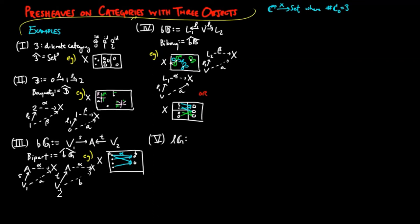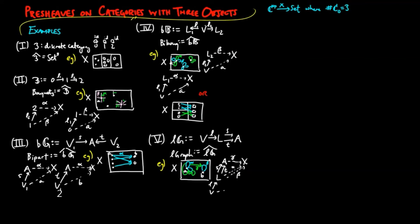The category of pre-sheaves on the category LG has containers which are graphs with vertices as loops, so an A figure gamma has a source loop alpha and a target loop beta, which in turn have vertex boundaries A and B, respectively.